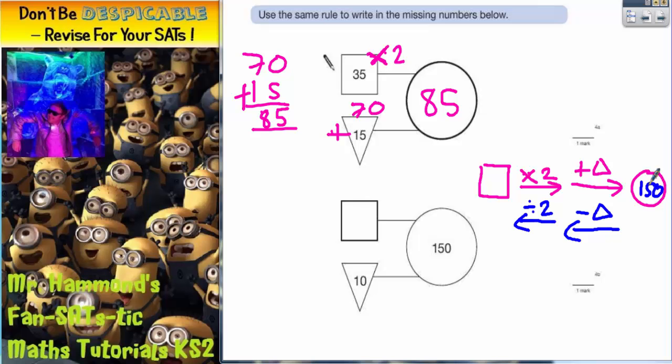So we start at the end here with a number in the circle, 150. Subtract the triangle, you're going to get 140. And then divide that by 2, you're going to get 70. So it looks as though the number in the square has to be 70.